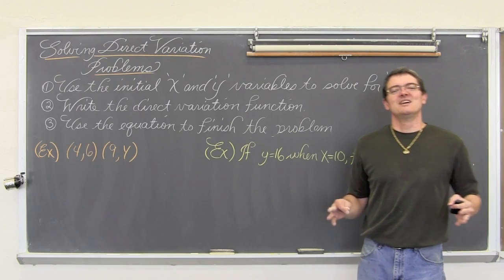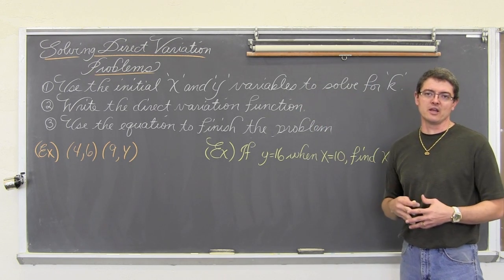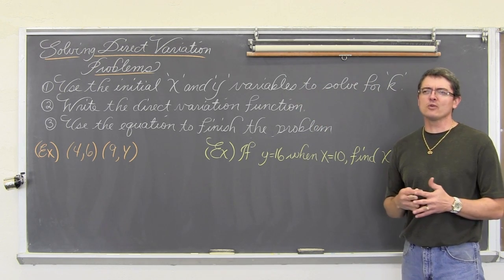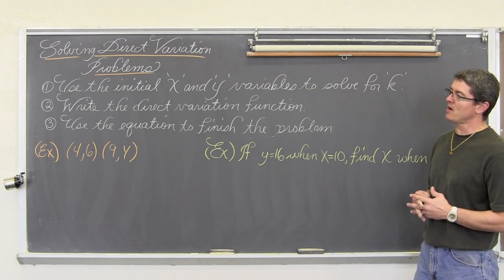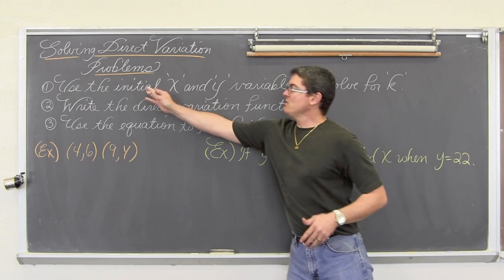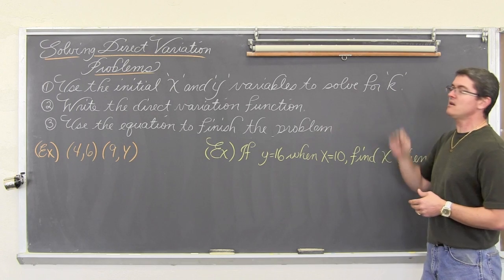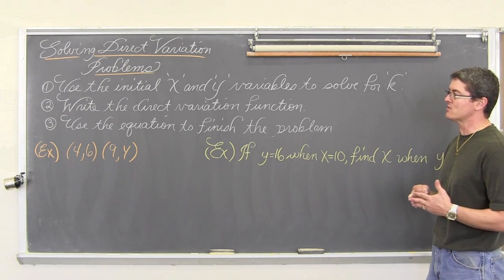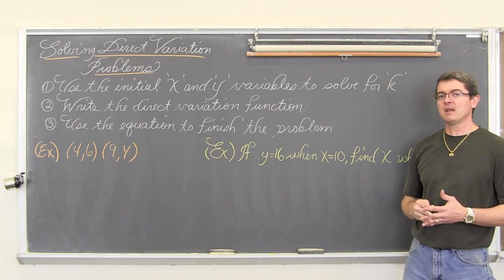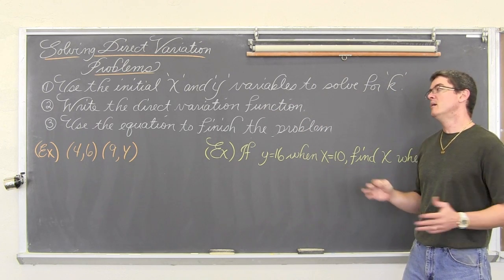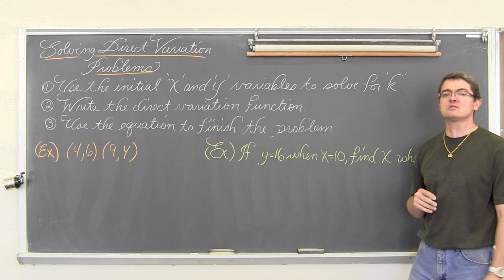BAM! So now that we can recognize direct variation, let's solve some problems that involve direct variation. These questions pretty much all work out the same, so we have some steps and we are going to work through three examples, the last one being a word problem. You are going to use the initial x and y variables, the initial values given to you, to find the constant value of k, the constant value of change. You are then going to, or I suggest very strongly that you write out that equation, and with some question that is all you have to do, you are done. But if they go on to ask you, you know, to solve some further questions, use that equation to finish the problem.